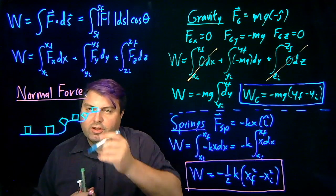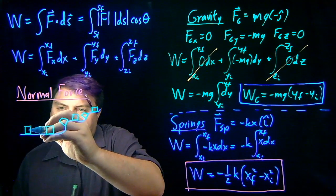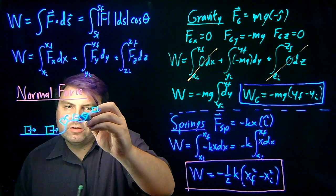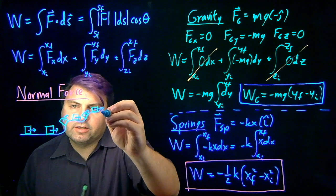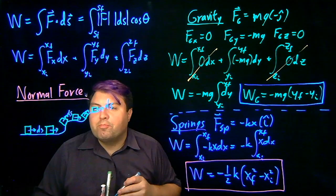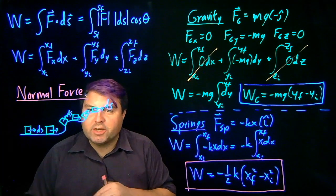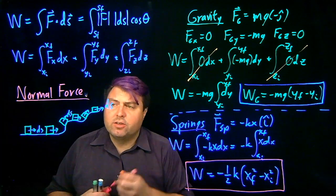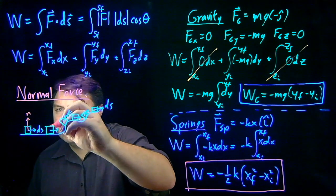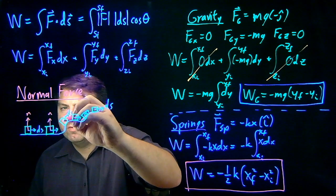As we move along this floor, our ds, or what we're doing, is going to be always parallel to the floor where we're at, so that this is our ds. But our normal force, we know, must be perpendicular to the surface at any point. So that this is our normal force.